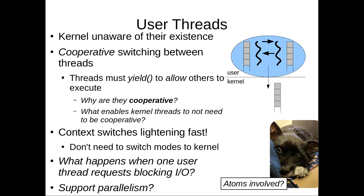The benefits of user-level threads are that all context-switching code can be at user level, making it lightning fast — on the order of 10 to 50 cycles depending on the system — with very few atoms involved since no system call is needed. But the big downside is that if one user-level thread makes a blocking system call, the kernel blocks all of those user-level threads together. The other downside is it does not support parallelism: if there's only one kernel thread, the kernel can only execute it on one core. You need more kernel threads if you want parallelism.